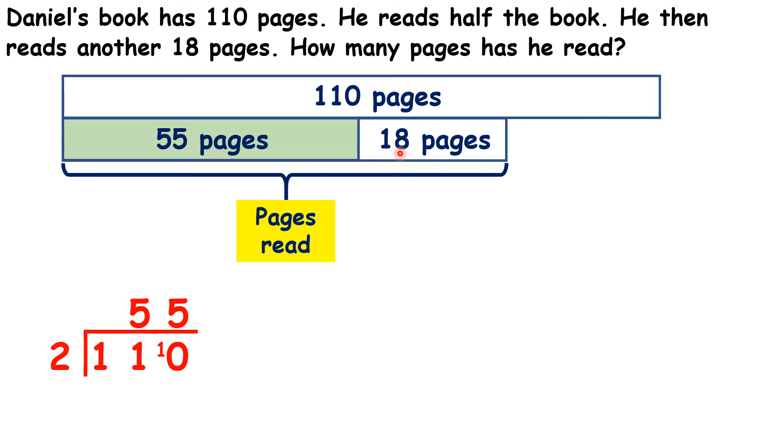So to work out how many pages he read all together, we need to add 55 and 18. That gives us 73. So Daniel has read 73 pages.